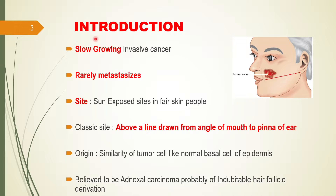So what is basal cell carcinoma? It is a slow-growing invasive cancer. It is a malignant epithelial tumor but it is very slow-growing and it is rarely metastatic. It doesn't spread to other organs like other malignancies. It is one of the exceptions in which, although it is malignant, it usually doesn't metastasize via blood into other organs.